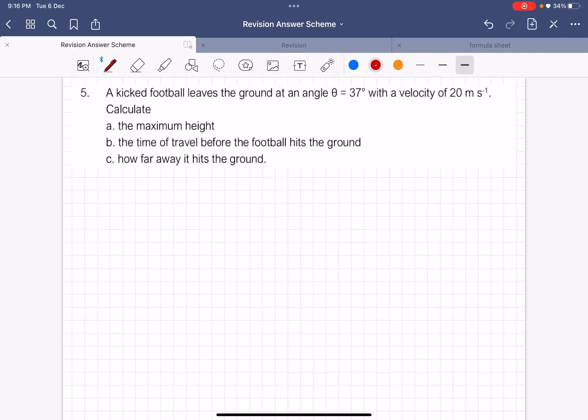Alright, question number 5. This one is a projectile motion at an angle that is not 90 degrees or 0 degrees, but between 1 to 90 degrees.